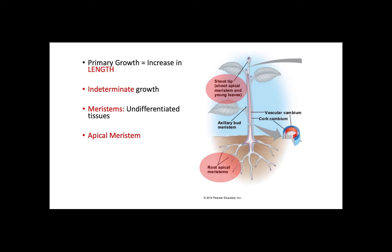During primary growth, meristems give rise to three tissues called primary meristems: the protoderm, which produces dermal tissue; the ground meristem, producing ground tissue; and the procambium, which produces vascular tissue.